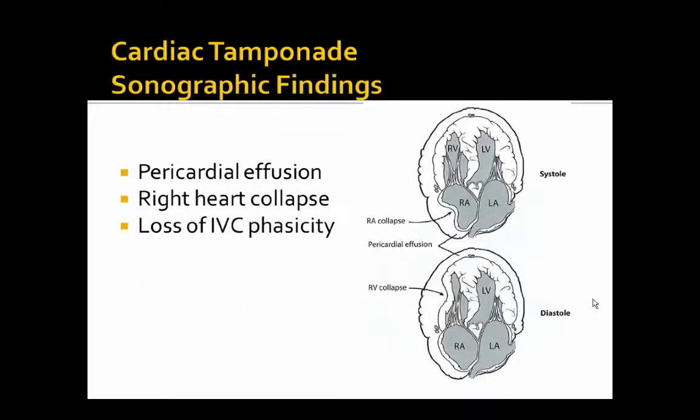If you remember anything about differentiating a simple pericardial effusion from tamponade, one of the biggest things is collapse of the right side of the heart — usually the easiest to recognize is right ventricular collapse. There is also systolic right atrial collapse, but that's sometimes more difficult to recognize. We'll also talk about losing the phasicity of the inferior vena cava as another secondary finding.